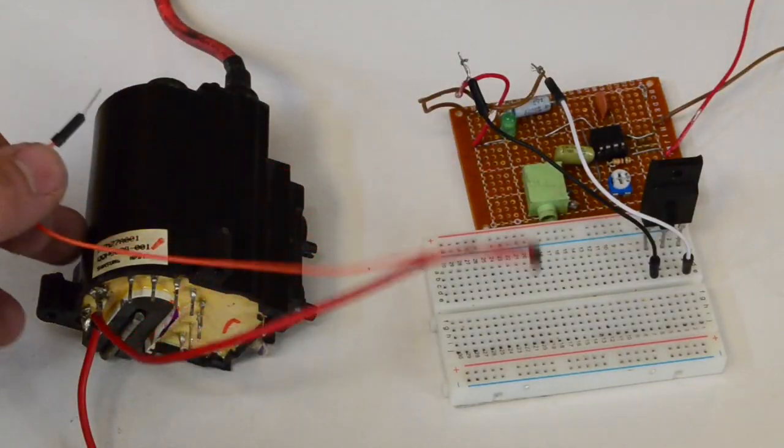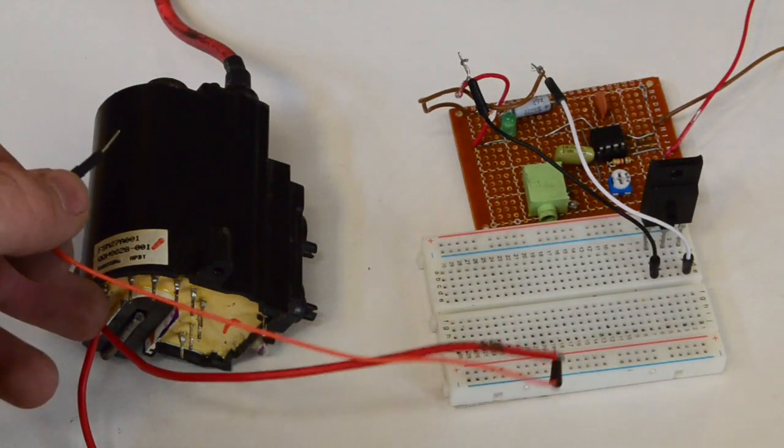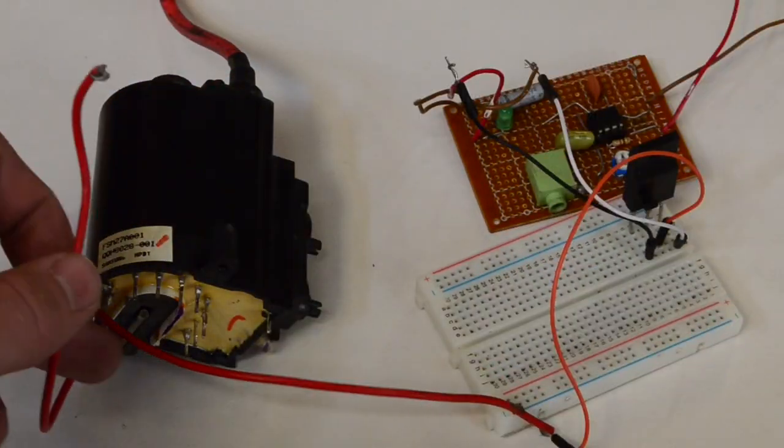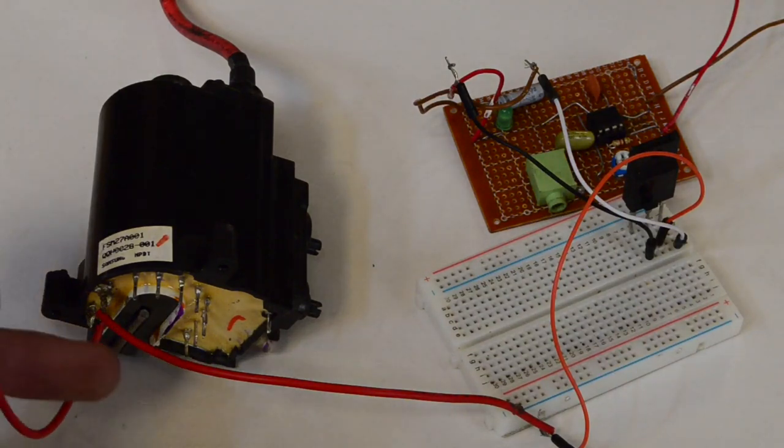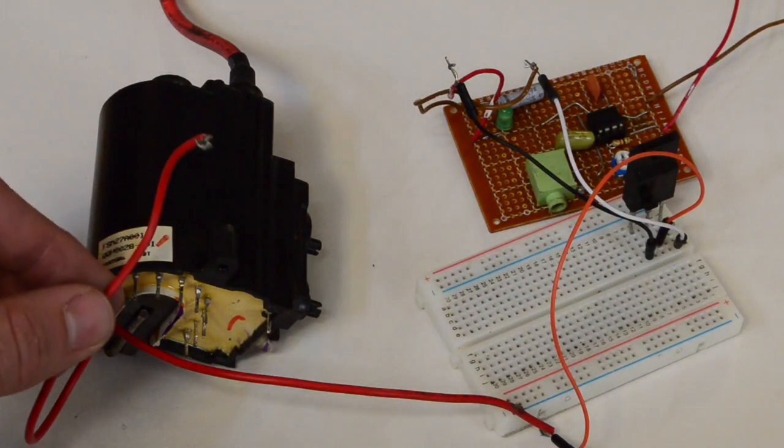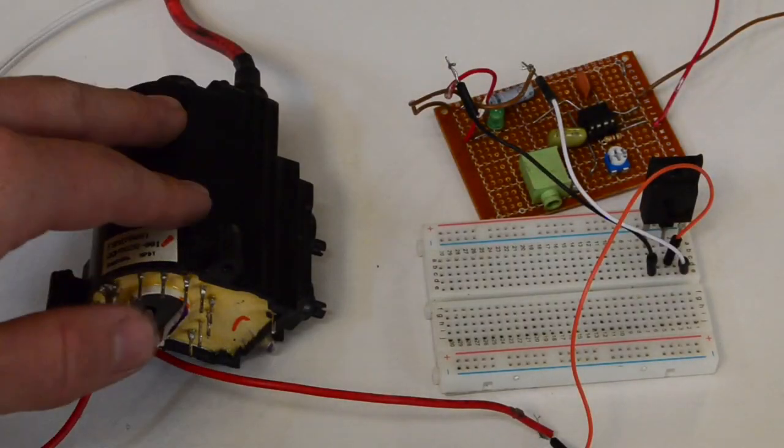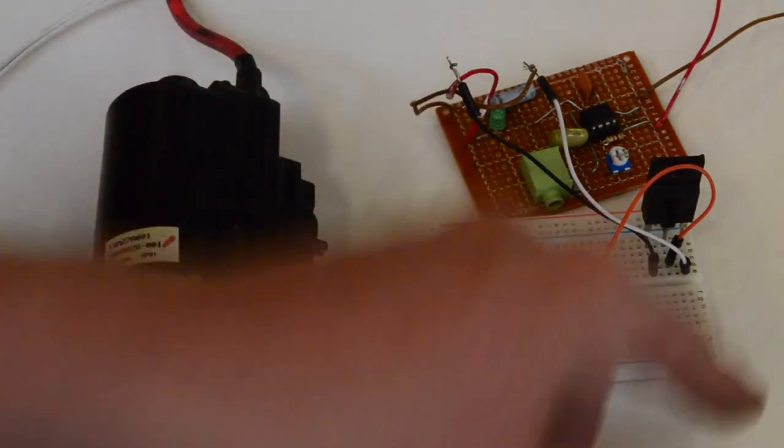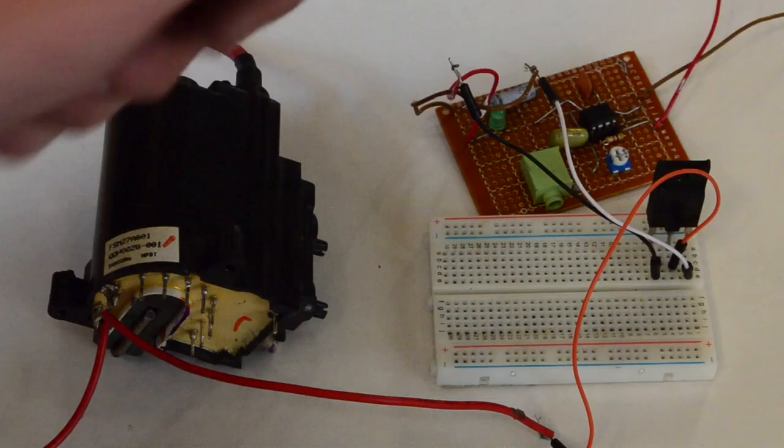Now let's take one end of the primary coil of the flyback transformer and connect it right over here to the collector of the transistor. The other wire connected to the other side of the primary coil is going to be connected up to our voltage positive. Now take the negative of the power supply and connect it over here to the emitter of the transistor.